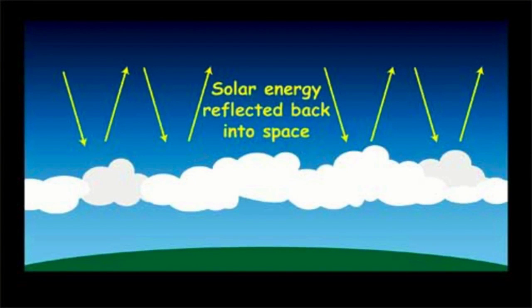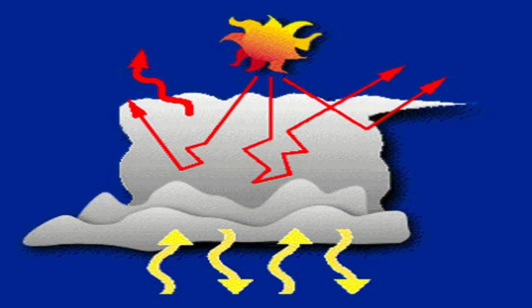However, if skies are cloudy, some of the sun's rays are reflected off the cloud droplets back into space. Less of the sun's energy is able to reach the surface, leading to cooler temperatures.